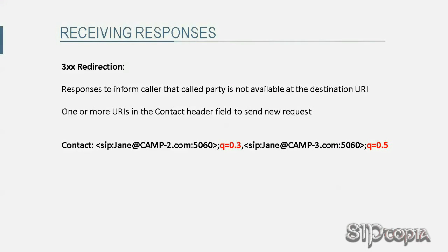3xx responses inform the caller that the called party is not available at the destination URI. They come with one or more URIs in the contact header field that the caller may use to send new requests to in order to reach the called party. The caller can choose to send new requests to any of the URIs in the contact header field, serially in any order or in parallel with multiple requests to different URIs at the same time.